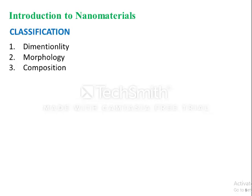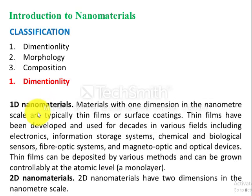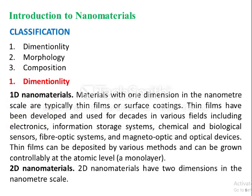Nanoparticles can be classified into different classes depending upon their dimensionality, morphology, and composition. First, we will talk about dimensionality. Nanoparticles can be divided into three categories: one-dimensional nanomaterials, two-dimensional nanomaterials, and three-dimensional nanomaterials. One-dimensional (1D) materials are those nanoparticles which are in nanoscale along one dimension, typically thin films or surface coatings.